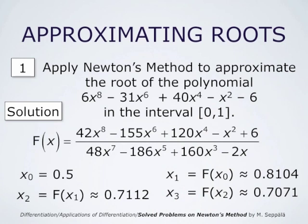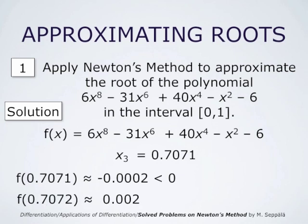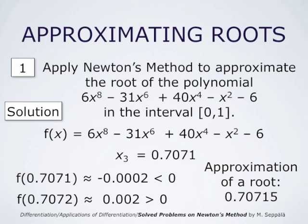In order to be certain that we have a solution, we evaluate the function f at x3 and nearby. f(0.7071) is approximately minus 0.0002, a negative number, and f(0.7072) is approximately 0.002, a positive number. Therefore, since the polynomial is a continuous function, it actually has a root between 0.7071 and 0.7072. We take the midpoint of this interval as our approximation: 0.70715, which is a pretty good approximation of the root.